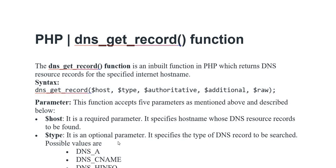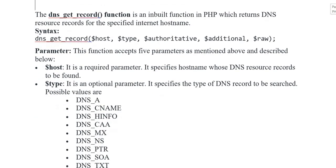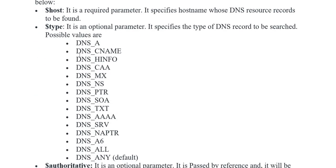Second parameter is variable type — an optional parameter specifying which type of DNS record to query. Possible values include: DNS_A, DNS_CNAME, DNS_INFO, CWE, MX, and other classes put kia gaya.